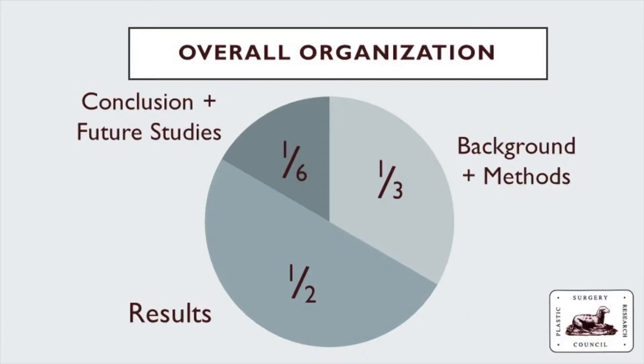Once you have the background and your main points squared away, you need to tell the audience how you did the research — this is the methods. Some researchers like to describe the methods as they show the results; this is an advanced approach reserved for the experienced presenter. For many, showing a single slide that outlines the methods and approach is an easy way to define what you're working with. Overall, the background and methods portion should be about one-third of your presentation, the results about half, and the remaining time on conclusions and future studies.